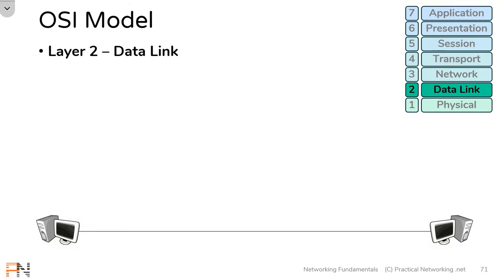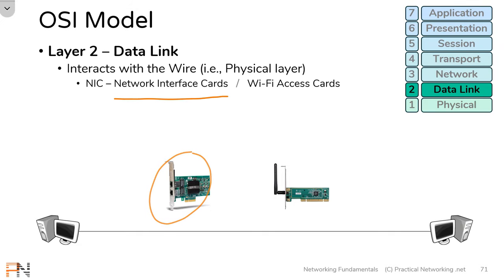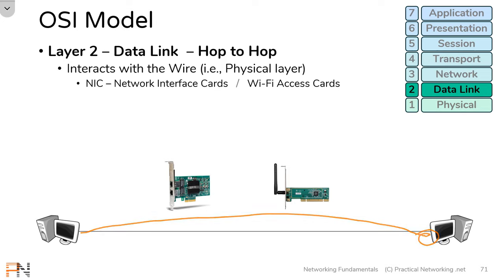Layer 2 is going to interact with the physical layer — it's going to actually put bits on the wire and retrieve bits from the wire. Whatever this wire actually connects to on a PC is considered a Layer 2 item, meaning the NIC or network interface card is considered Layer 2. The Wi-Fi access card is also considered Layer 2 because it's interacting with those Wi-Fi radio waves. The overall goal of Layer 2 is what I'm going to call hop-to-hop delivery, meaning Layer 2 exists to take ones and zeros from one NIC and move them to the other NIC — this is what I'm calling a hop.